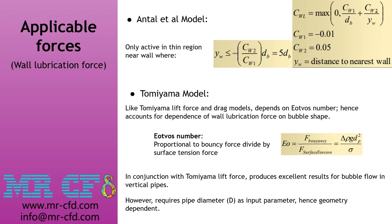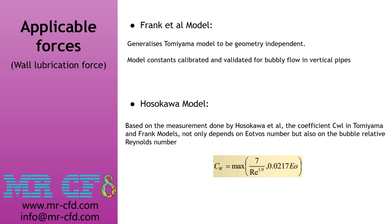When the Tomiyama model is used for both lift force and wall lubrication force, excellent results are obtained for bubble flow in vertical pipes; however, it requires pipe diameter as an input parameter, making it geometry-dependent. The Frank et al. model is a geometry-independent generalization of the Tomiyama model, with constants calibrated and validated for bubbly flow in vertical pipes. The Hosokawa model proposes that C_WL depends not only on the Eötvös number but also on the bubble relative Reynolds number, integrating effects of both parameters.